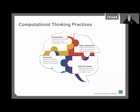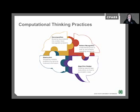Computational thinking consists of four core concepts: decomposition, pattern recognition, abstraction, and algorithm design. Decomposition describes the thinking practice of breaking a problem down into smaller pieces. Pattern recognition describes the thinking practice of finding similarities or patterns between different things. Abstraction describes the thinking practice of pulling out specific differences to make one solution work for multiple problems. And lastly, an algorithm is simply a list that you can follow to finish a task or reach a solution.